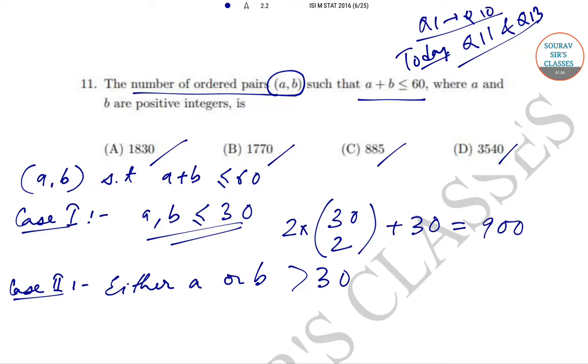And if either a or b is greater than 30, in the second case we can assume: suppose if a is equal to 31, then the set of b will be from 1 to 29. If a is equal to 32, then b will be from 1 to 28, and that will go on.